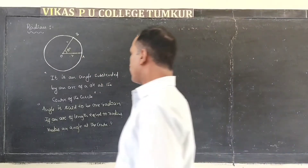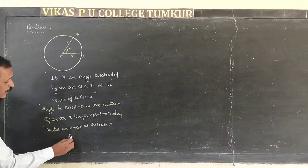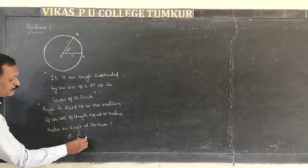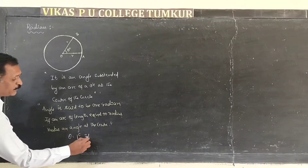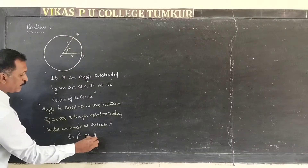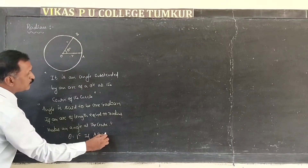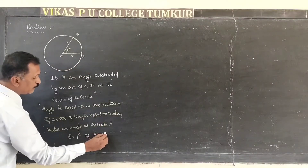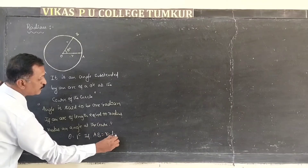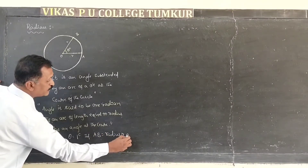Therefore, theta is said to be one radian if the arc length AB is equal to the radius of the circle.